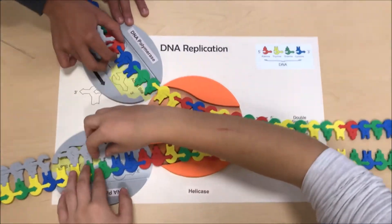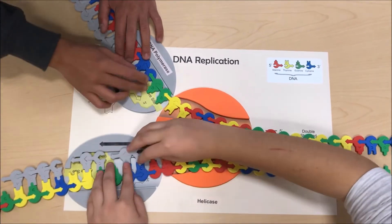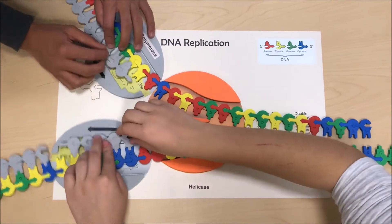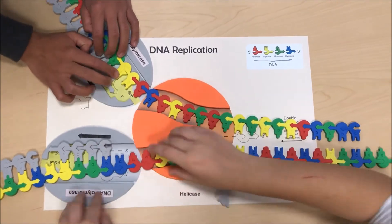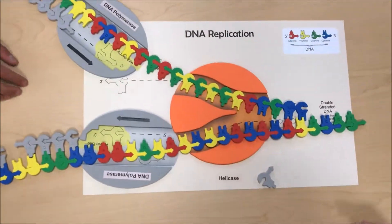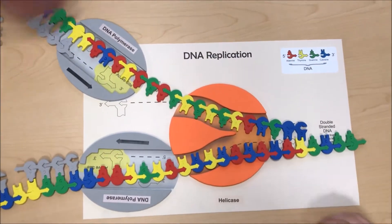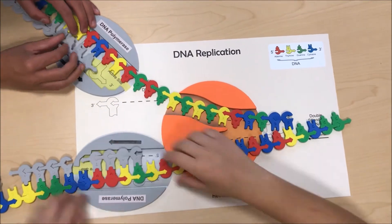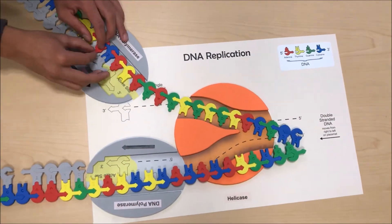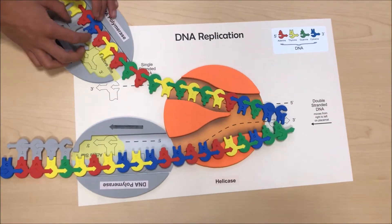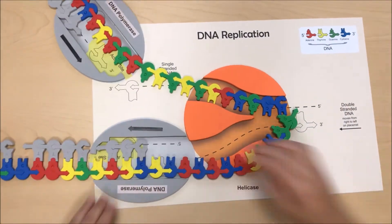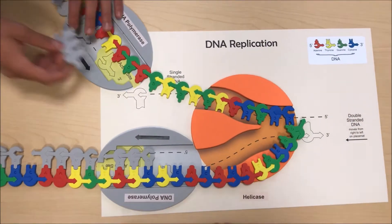On the other hand, we also have the lagging strand, which is the parent strand that runs in the 5' to 3' direction away from the fork and is replicated discontinuously, also known as discontinuous construction. The lagging strand is not replicated continuously because it is synthesized in short segments called Okazaki fragments.